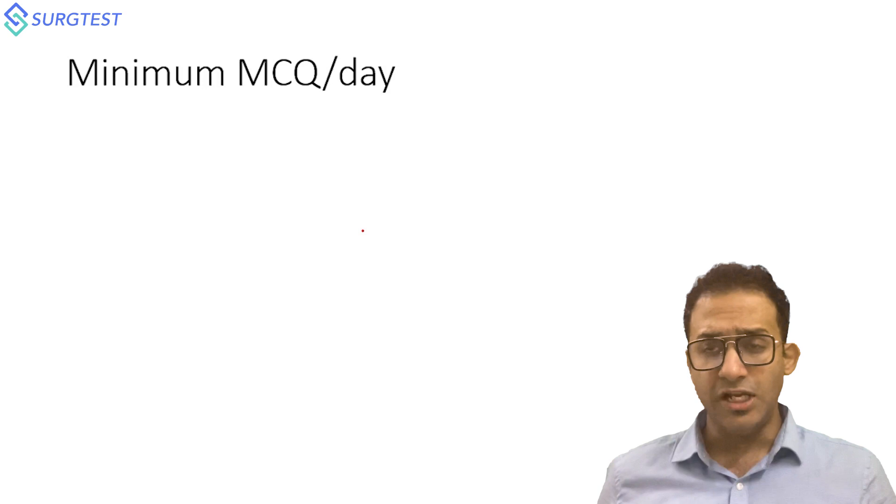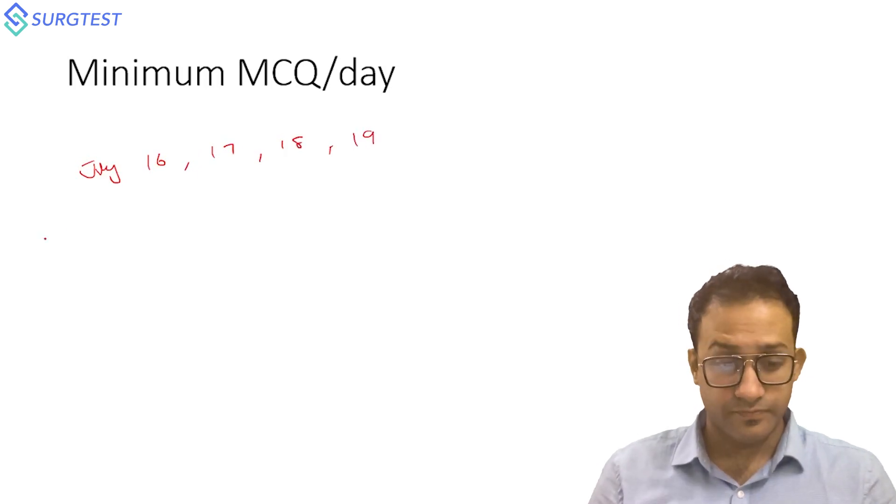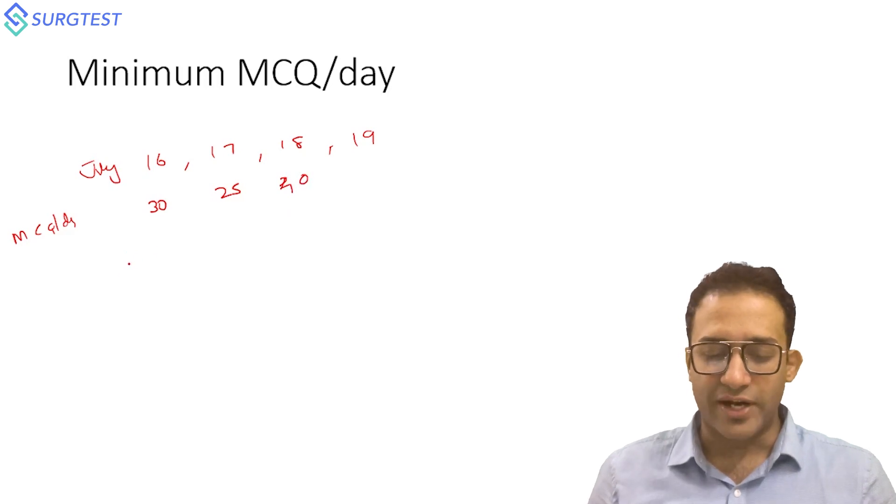45 days - your time is extremely valuable. Make sure that you use your time wisely. I have this concept of minimum MCQ per day. Make a chart in your room - say it's July 16, 17, 18, 19. MCQ per day. Just start: today I have done 30 MCQs in total, today I did only 25, today I did 40. Make sure that on average you try to get 50 MCQs per day.